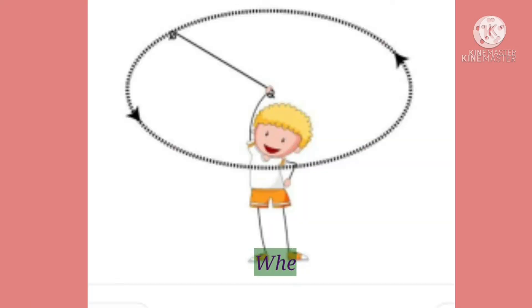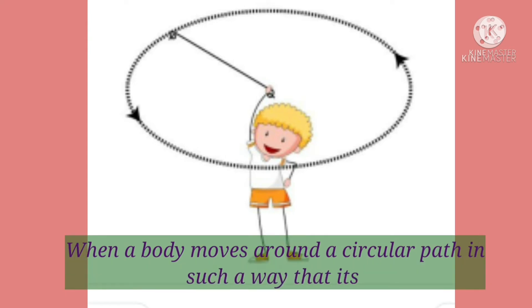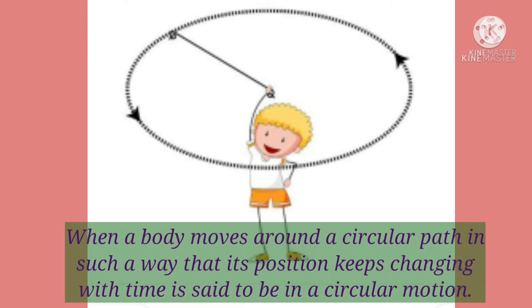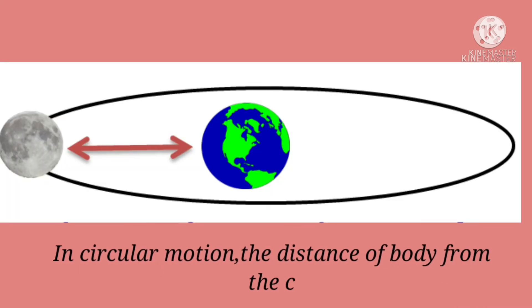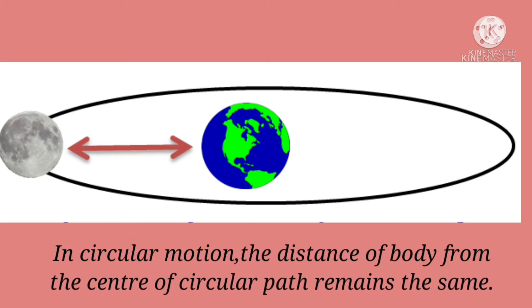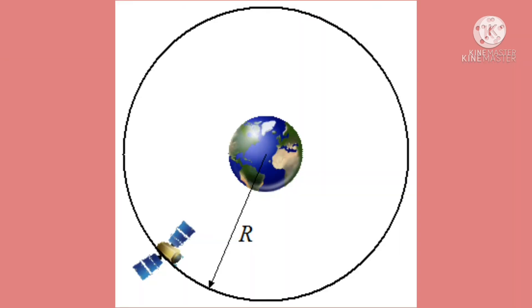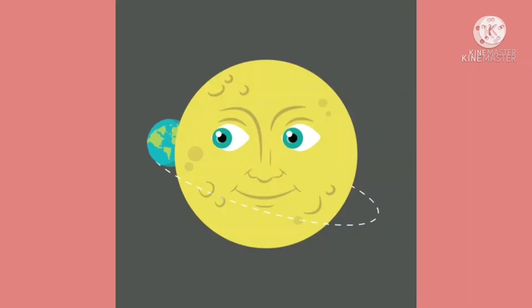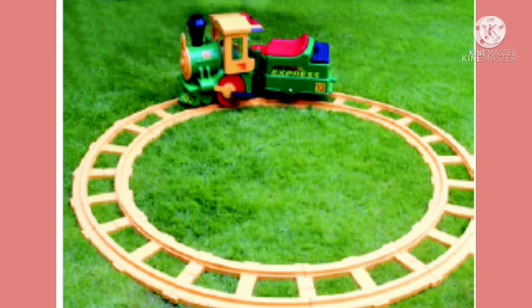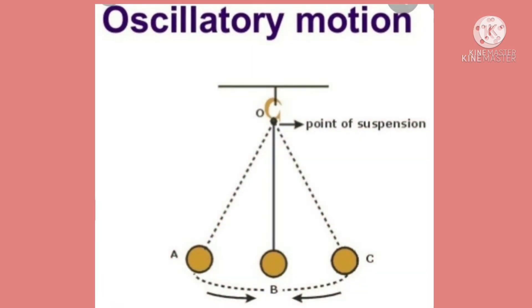Next, circular motion. When a body moves around a circular path in such a way that its position keeps changing with time, it is said to be in circular motion. Remember that in circular motion, the distance of the body from the center of the circular path remains the same and the body reaches the same point from where it started its motion. The motion of the earth around the sun and the motion of a toy train around a circular path are some examples of circular motion.